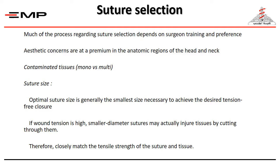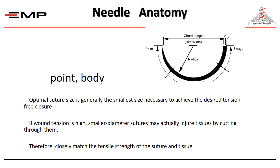Much of the process regarding suture selection depends on surgeon training and preference. Aesthetic concerns are at a premium in the anatomic regions of the head and neck. In contaminated tissues, we prefer monofilament suture material rather than multifilament. Regarding suture size, optimal suture size is generally the smallest size necessary to achieve the desired tension-free closure. If wound tension is high, smaller diameter sutures may actually injure tissues by cutting through them. Therefore, closely match the tensile strength of the suture and tissue.